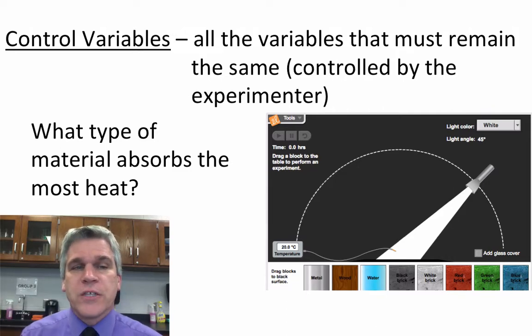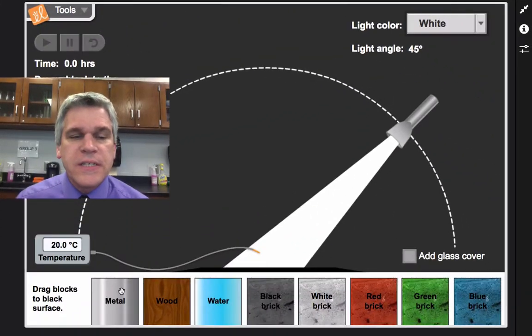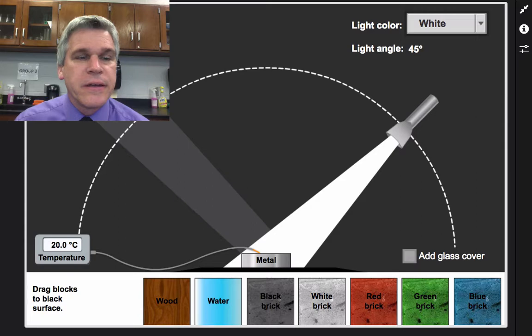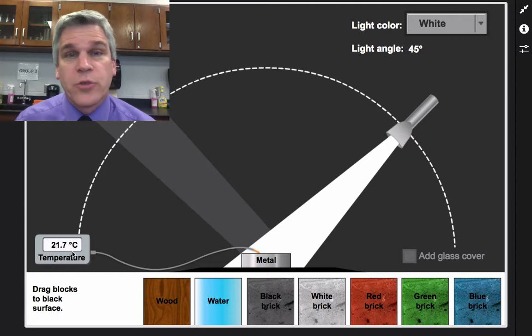So let's look at this question. What type of material absorbs the most heat? In this example, I can take, say, a metal and measure the temperature over a period of three hours. And it went from 20 degrees Celsius to 21.7 degrees Celsius.